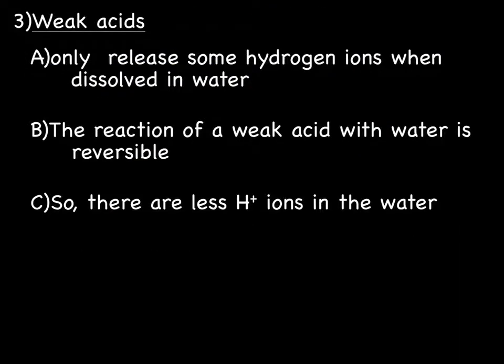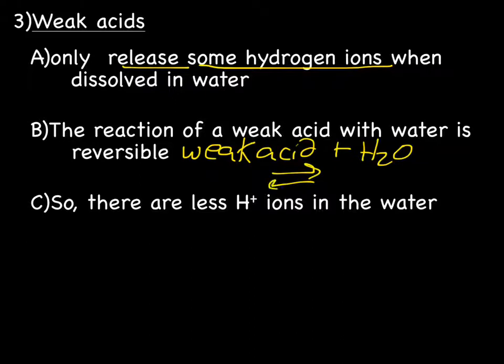We also have weak acids. Weak acids only release some of their hydrogen ions when dissolved in water. That means that when you drop a weak acid into water, the hydrogen ions fall off the acid a little more reluctantly. And so the reaction of a weak acid with water is reversible. So if we had written a weak acid plus water, you would have the reversible arrows. And because the weaker acids are more reluctant to release their hydrogen ions, you're going to end up with less hydrogen ions in the water.